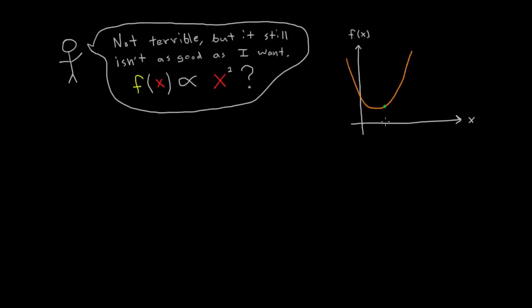This is a bit better, but Taylor still isn't satisfied. The next thing to try is to pretend that F depends on X squared. This means that F of X is a parabola.